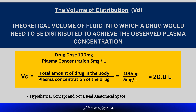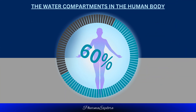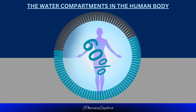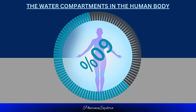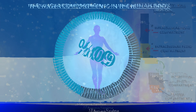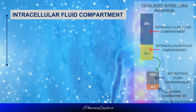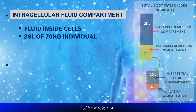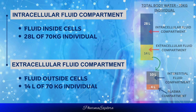It is a hypothetical concept and does not necessarily correspond to a real anatomical space. To understand this concept more easily, let's have a look at water compartments in the body. The human body is composed of about 60% water, distributed in two main compartments: the intracellular fluid compartment and the extracellular fluid compartment.